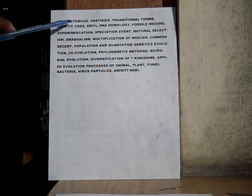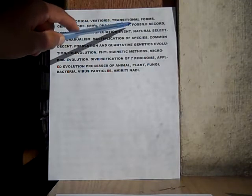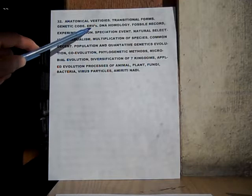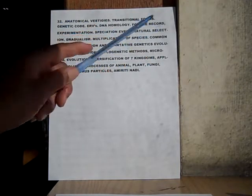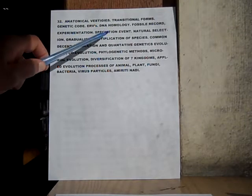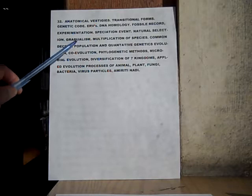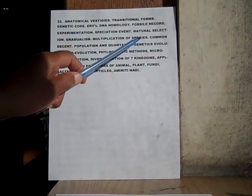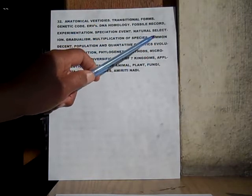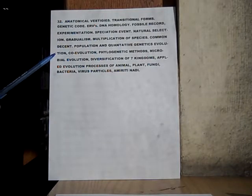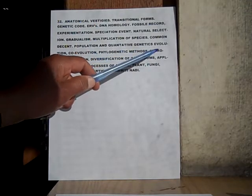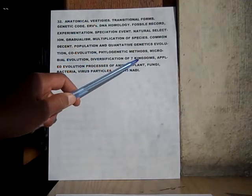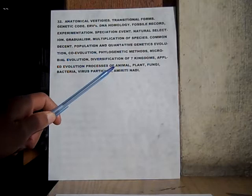Number thirty-two: anatomical vestiges, transitional forms, genetic code, ERVs, DNA homology, fossil record, experimentation, speciation events, natural selection, gradualism — that means it happens over long periods of time — multiplication of species by speciation methods, common descent, population and quantitative genetics, co-evolution, phylogenetic methods, microbial evolution, diversification of seven kingdoms, applied evolution — processes of animal, plant, fungi, bacteria, virus particles, and Ameritinidae.